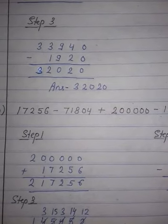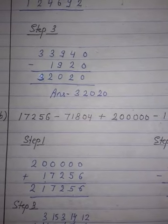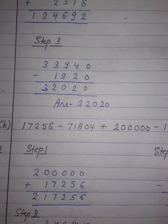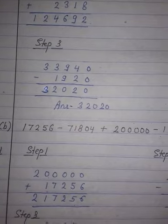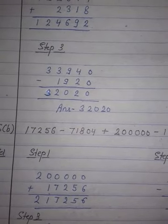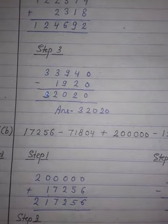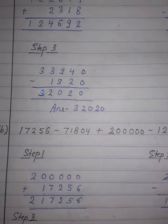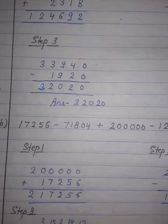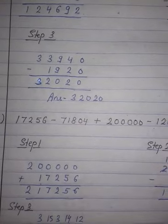So in this way, we do mixed addition and subtraction. If addition and subtraction are both given together, what will you do? You will do addition first, and after that you will subtract the given numbers step wise. Always remember: you will do the addition first. That's all for today. Thank you.